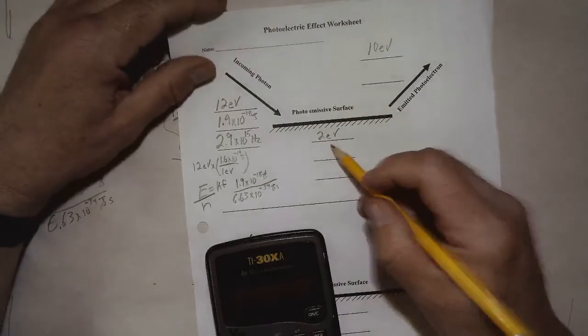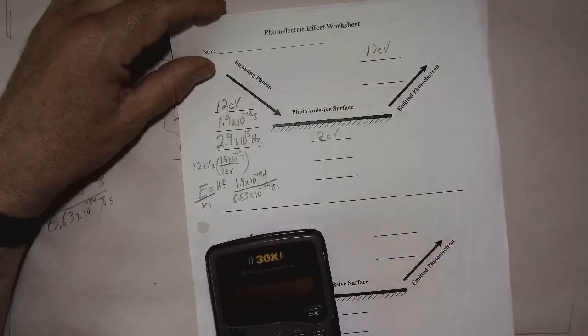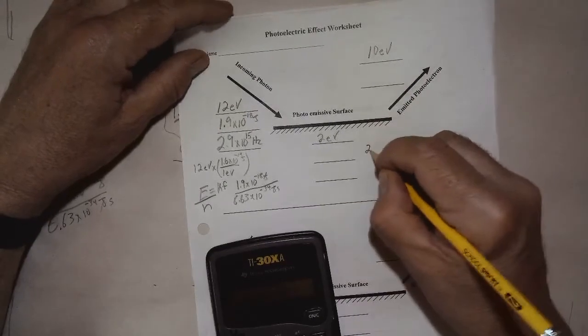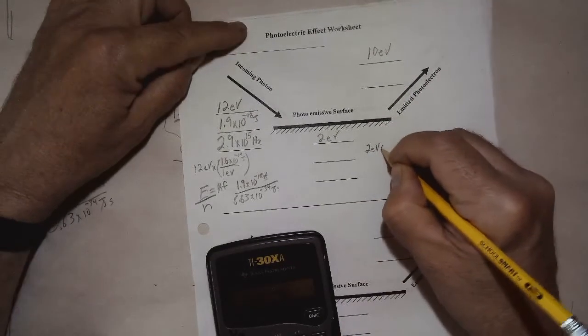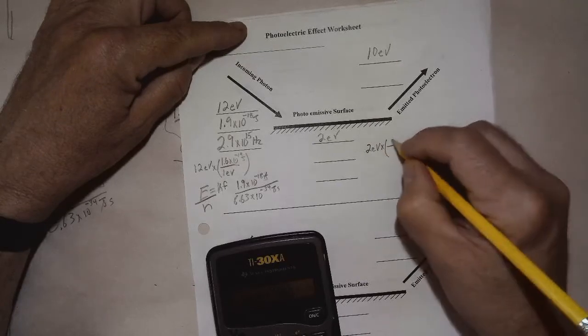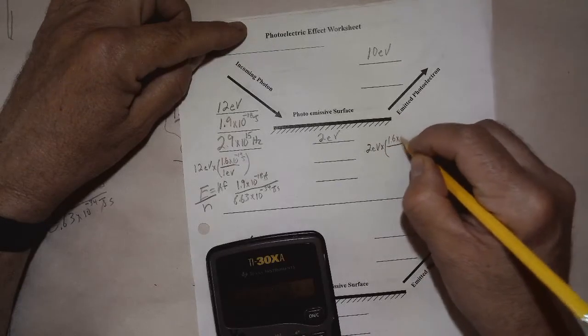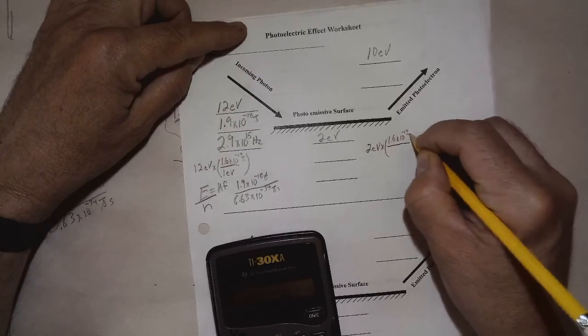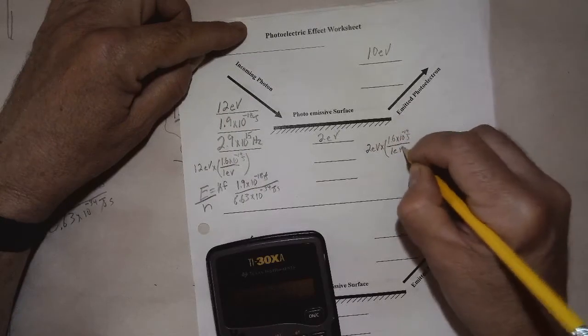So 2 eV here. Let's convert that. 2 eV. We're multiplying by 1.6 times 10 minus 19th joules is 1 eV.